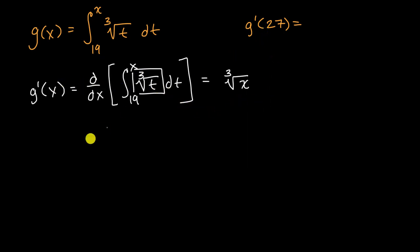And so going back to our original question, g'(27), well this is just going to be equal to the cube root of 27, which of course is equal to 3. And we're done.